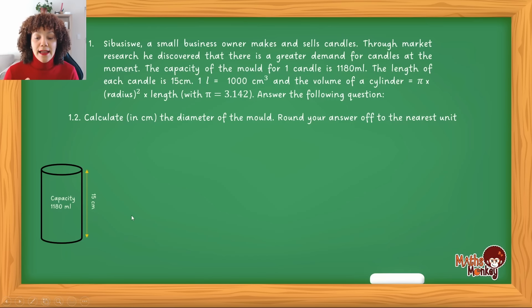So here is our candle mold. And the information that they give us is that the capacity, which means the amount of liquid that can fit in this mold is 1180 milliliters. They also tell us that the height is 15 centimeters. What they are asking us now is to calculate the diameter.